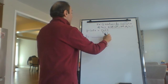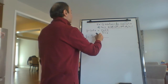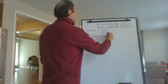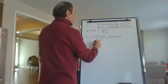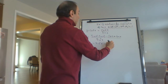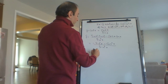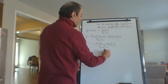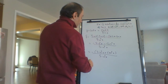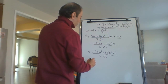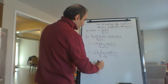So y prime will be: low squared — low d high minus high d low. That gives us negative sine squared x minus cosine squared x, all over sine squared x. I can factor the negative out, so that will be negative times (sine squared x plus cosine squared x) over sine squared x. We know that sine squared plus cosine squared equals 1.